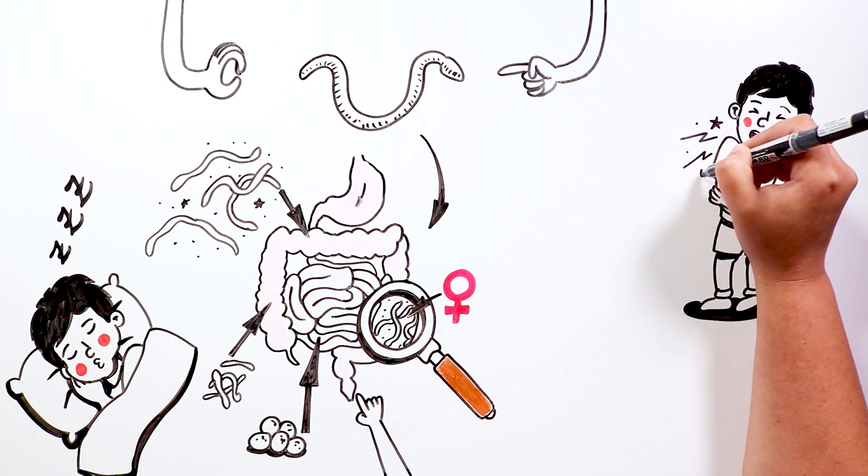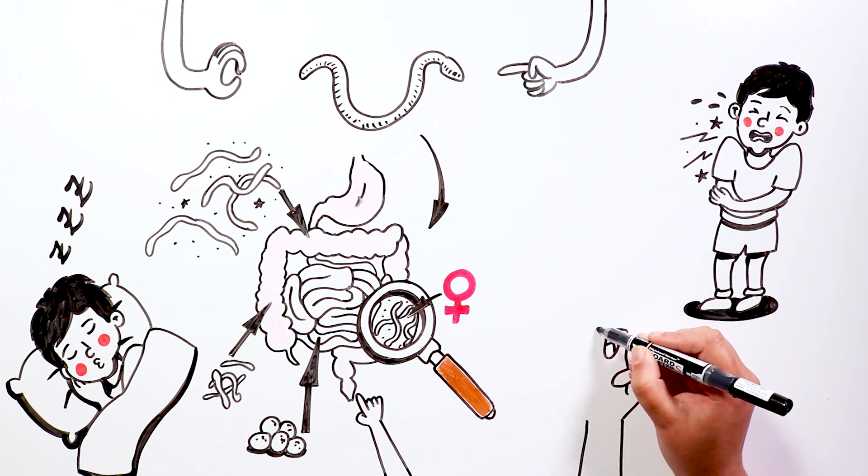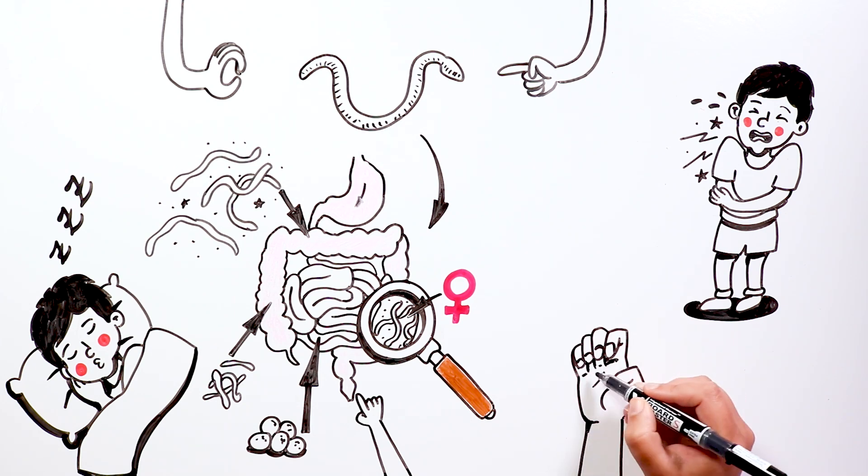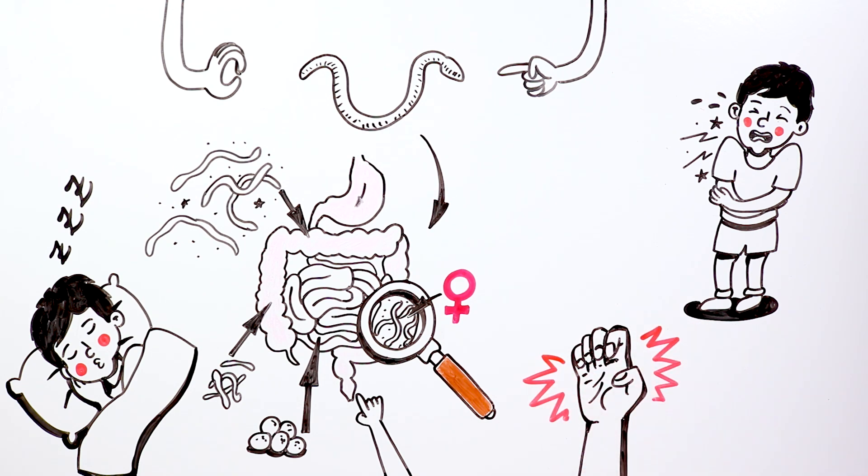When we scratch because of the itching, the eggs pass to the nails, which facilitates the reinfection of the same person and the transmission to others.